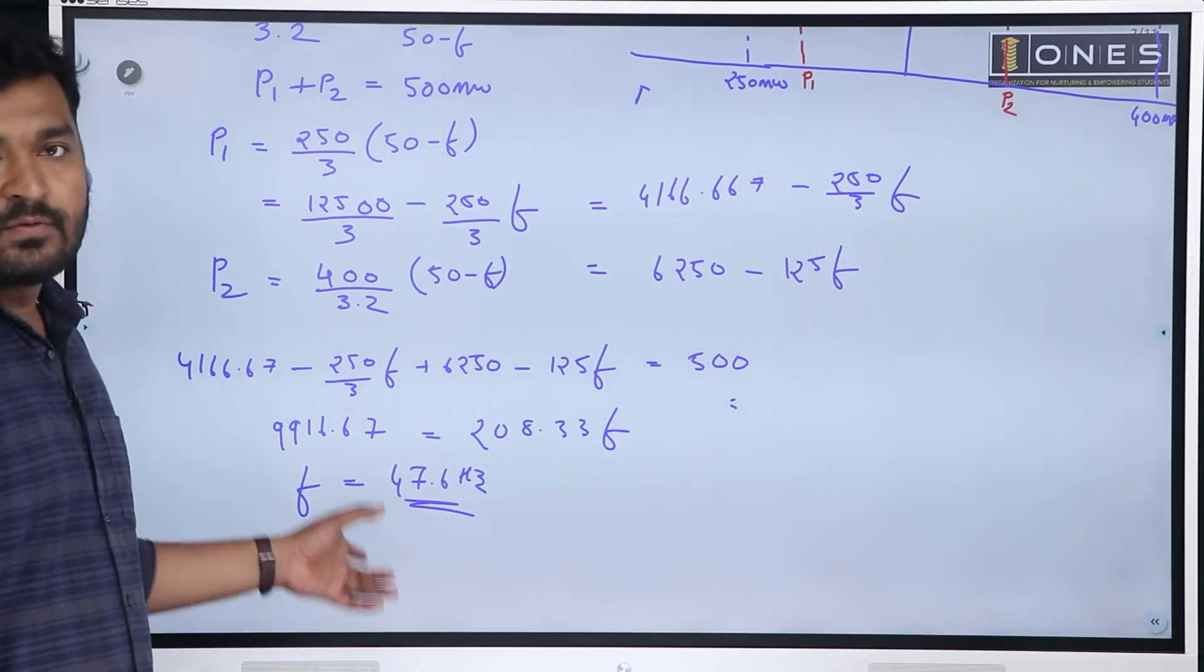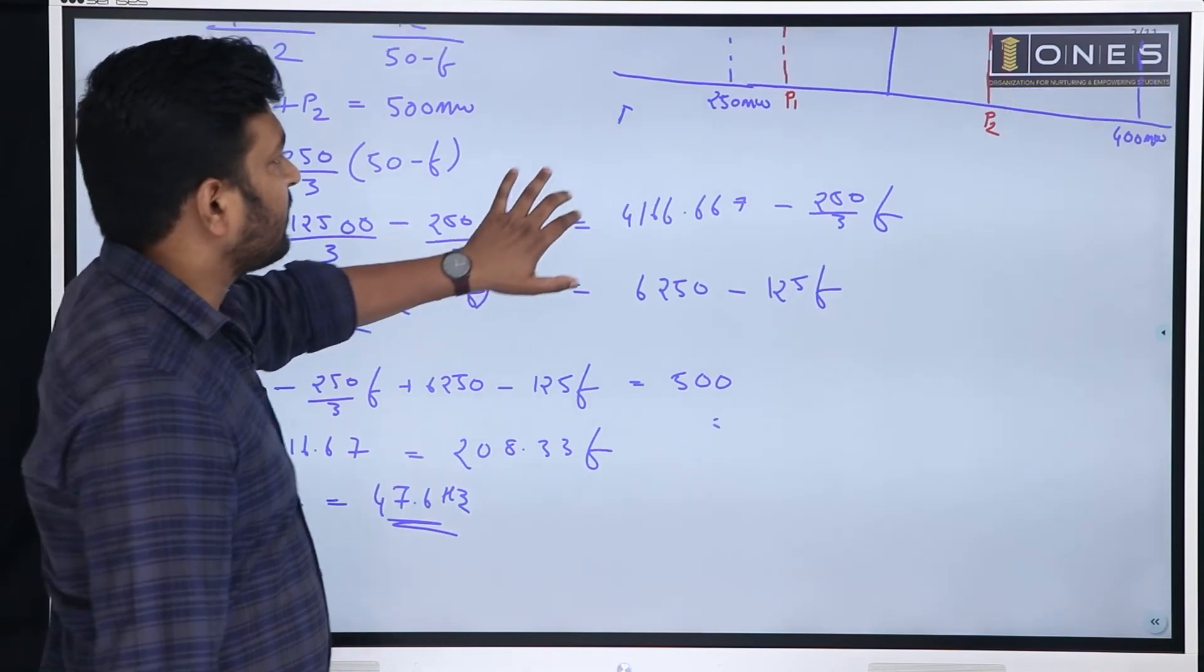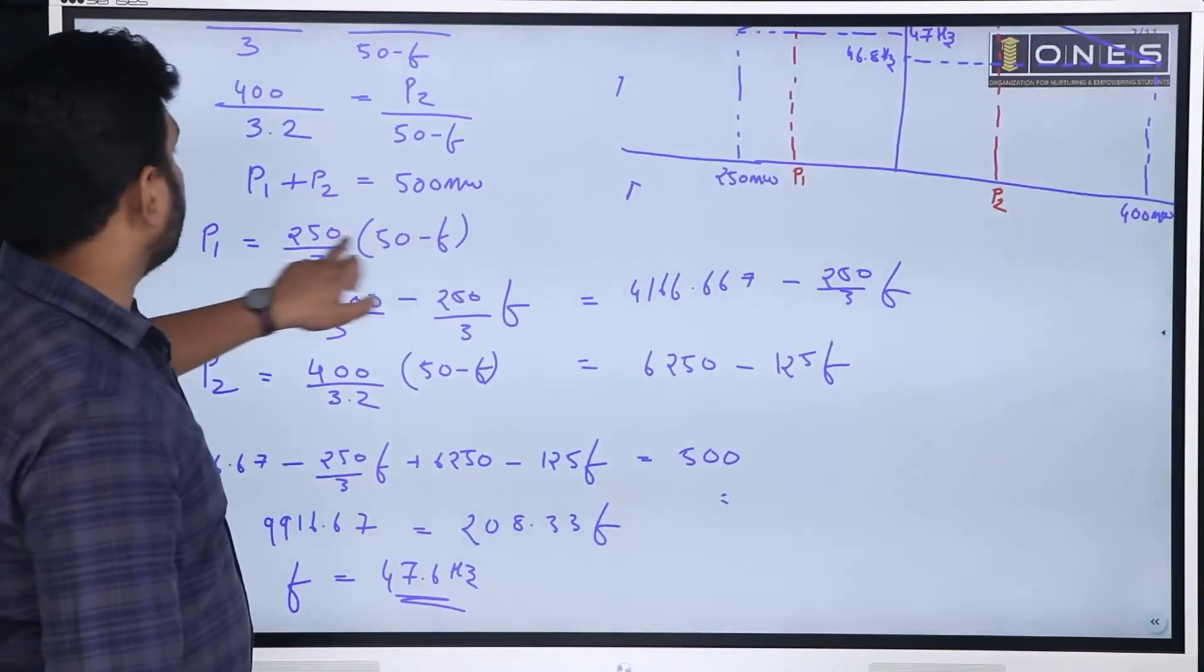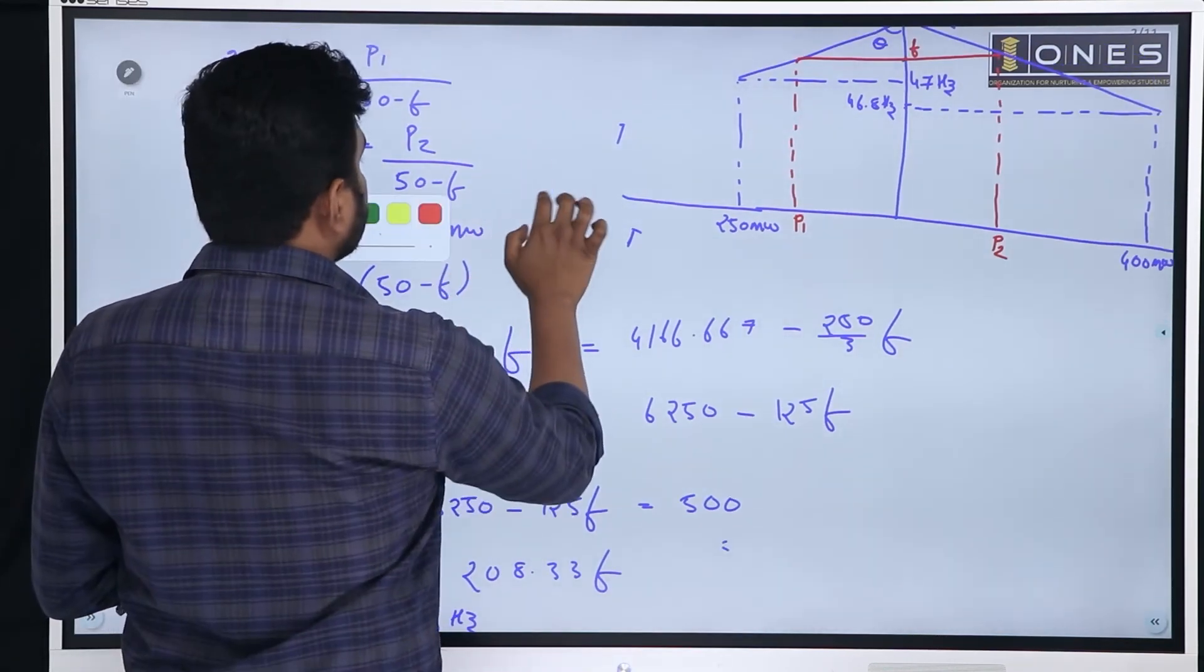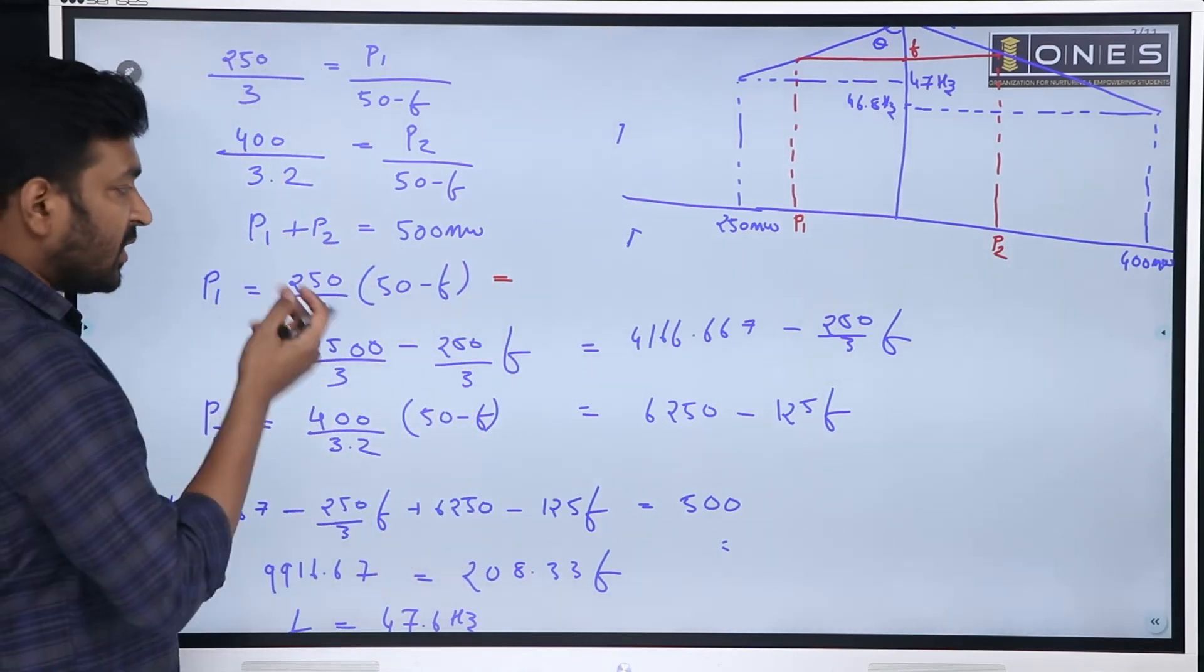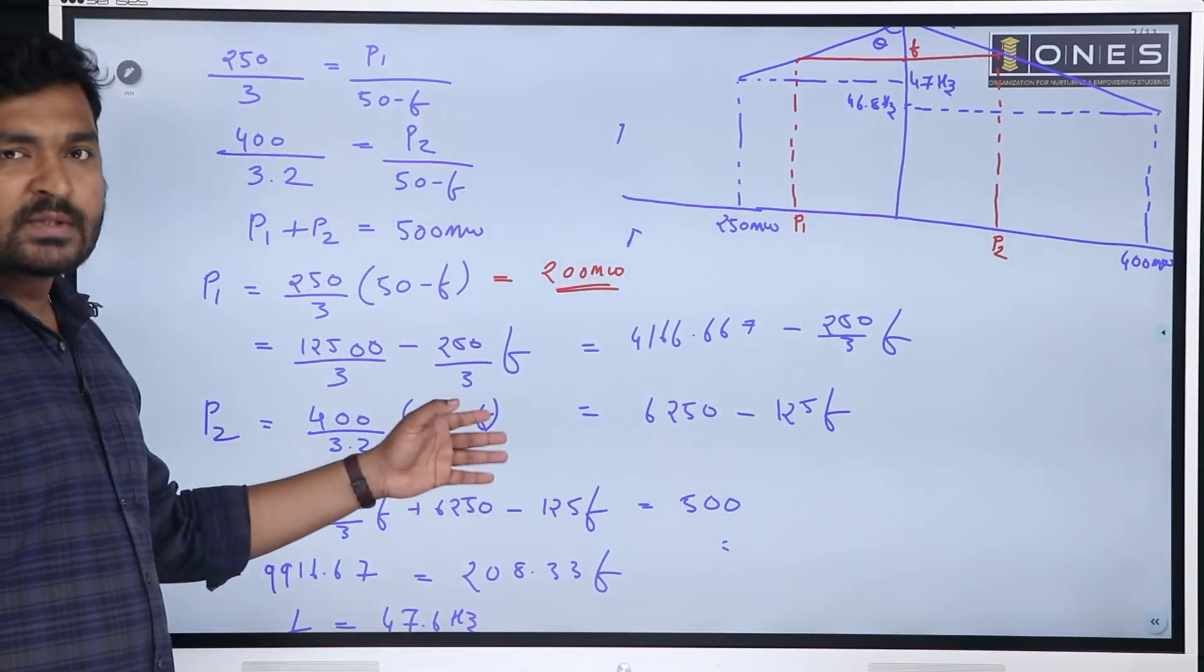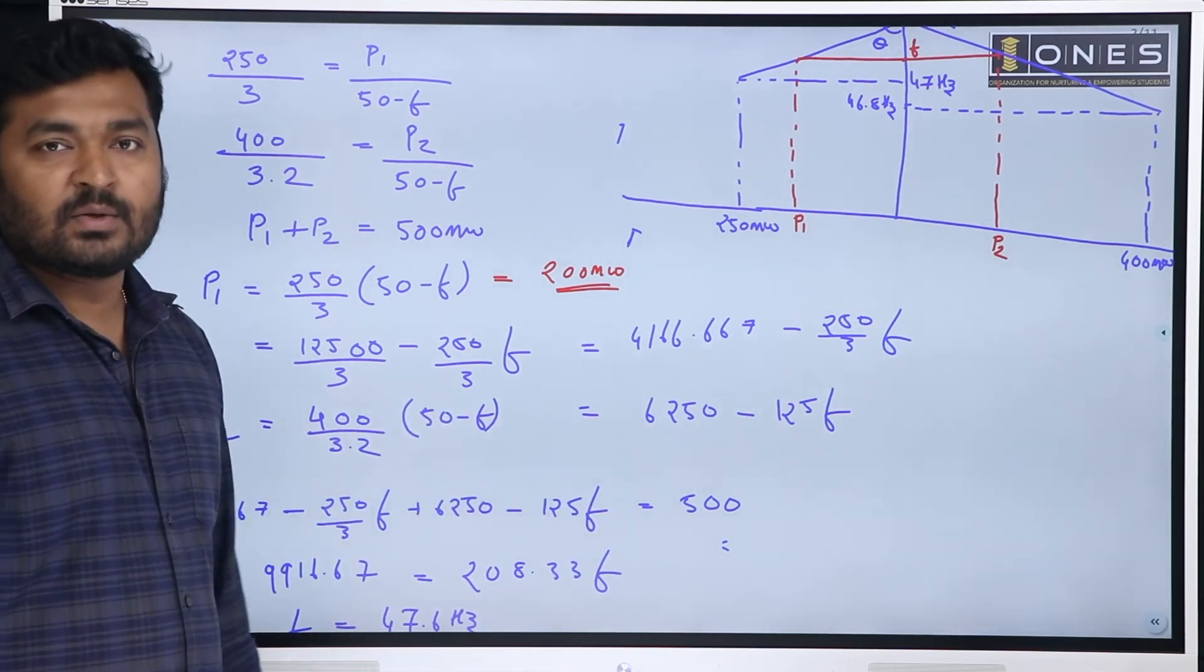So, we got the combined frequency, 47.6 hertz. This is when alternators work in parallel. This is the frequency, 47.6 hertz. This is P1. P1 is 250 by 3, 50 minus, you got F, 47.6, substitute here. I am getting answer P1 as 200 MW. So, the question was simple, just use some concepts and get it right. Thank you so much.